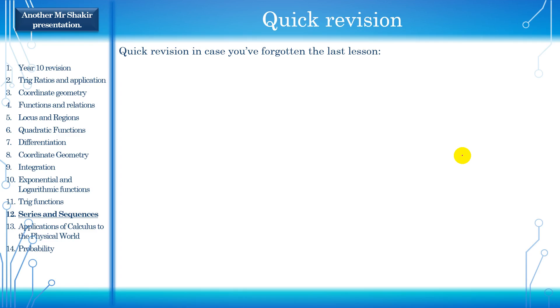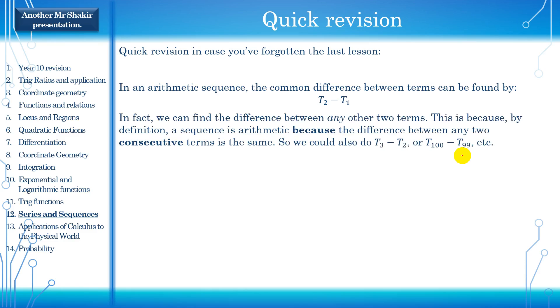Quick revision in case you've forgotten the last lesson. In an arithmetic sequence, the common difference between terms can be found by second term minus the first term. Now it doesn't need to be the second and the first term. The point is, it has to be any two consecutive terms. And the reason for this is, by definition, a sequence is arithmetic because the difference between any two consecutive terms is the same. So you could do the third term minus the second term, or you could do the hundredth term minus the 99th term. As long as you subtract and find the difference between two consecutive terms, you will get the common difference.